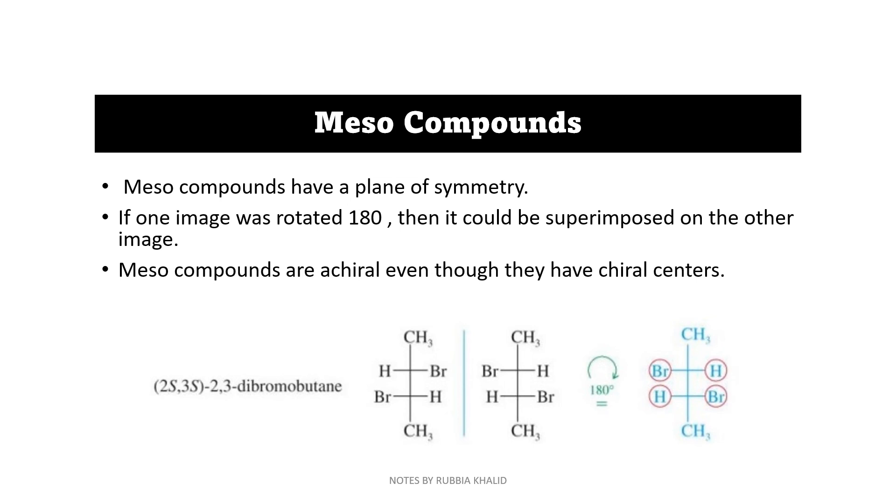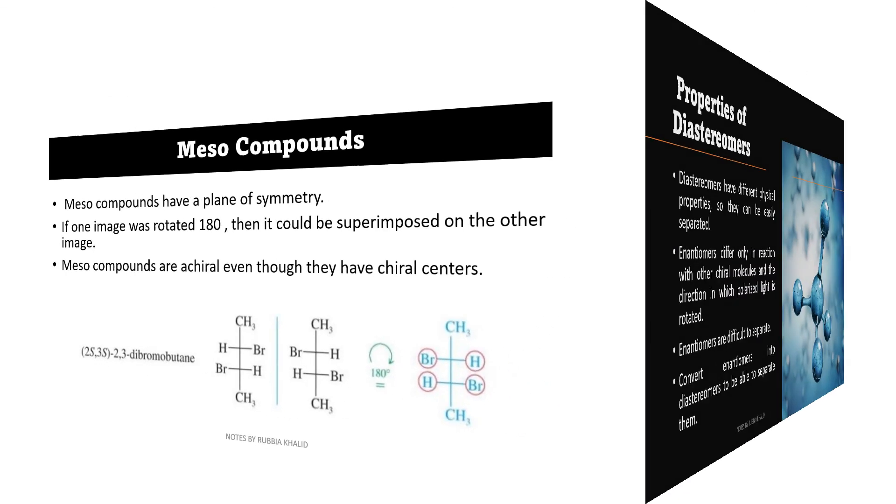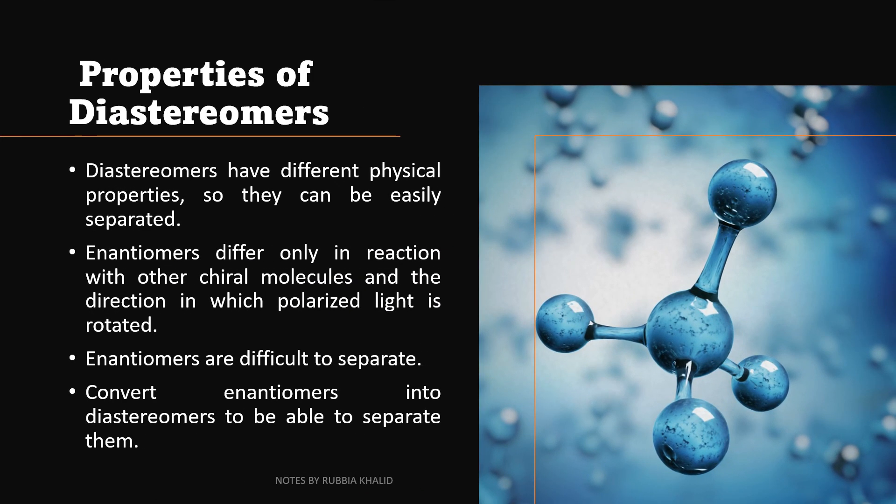Next, we have meso compound. Meso compounds have a plane of symmetry. If one image was rotated 180 degree, then it could be superimposed on other images. Meso compounds are achiral even though they have a chiral center. For example, 2,3-dibromobutane.